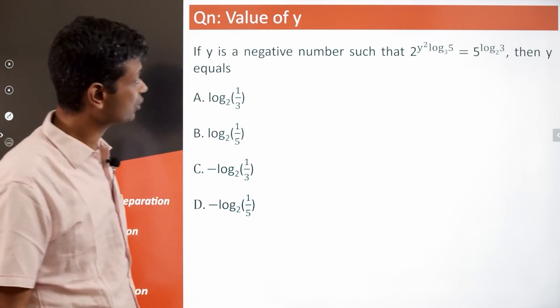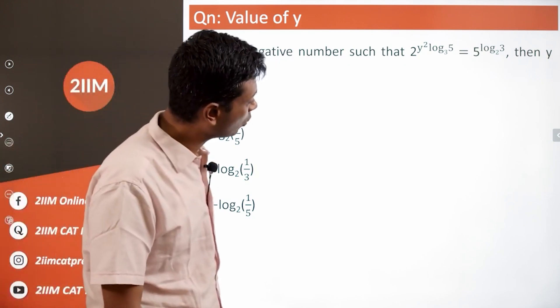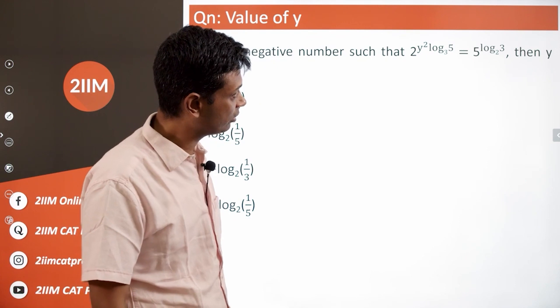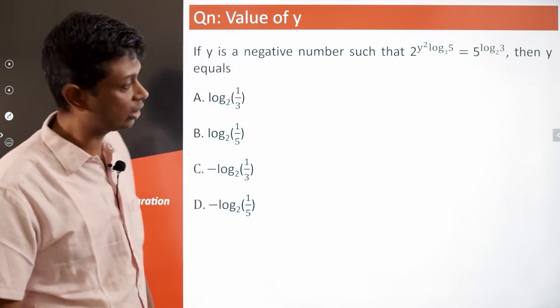Let's look at this one. If y is a negative number such that 2 power y square log 5 to the base 3 equal to 5 power log 3 to the base 2, then y equals...